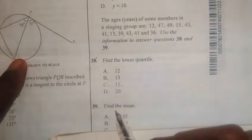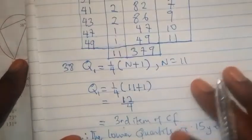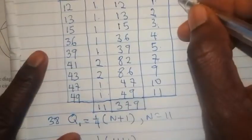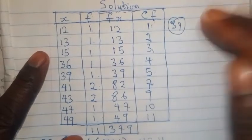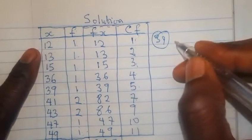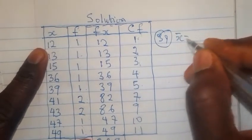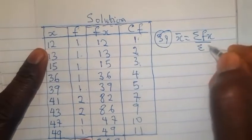Now, for question 39. We are told to find the mean. Alright? So, how do we get the mean? To calculate the mean, if you permit me, let us do question 39 here. Now, for us to calculate the mean, the mean has a formula. What is the formula for mean? We have bar X equals summation F of X divided by summation F.